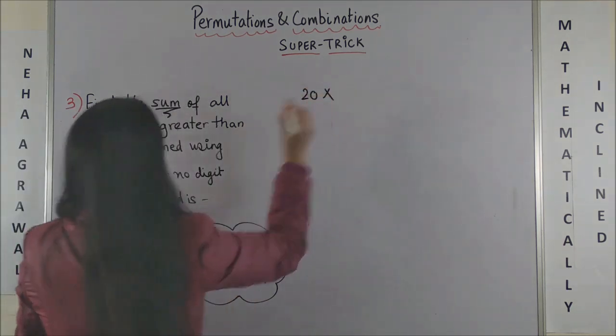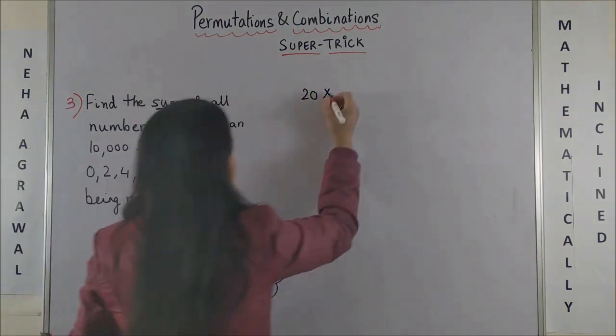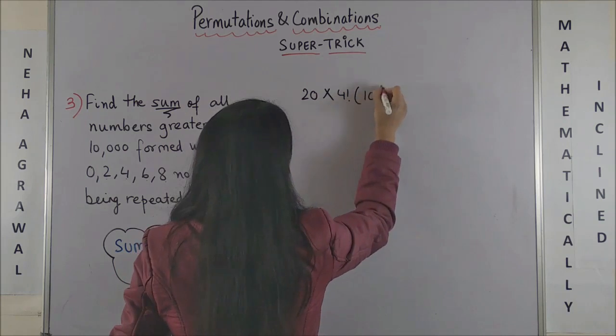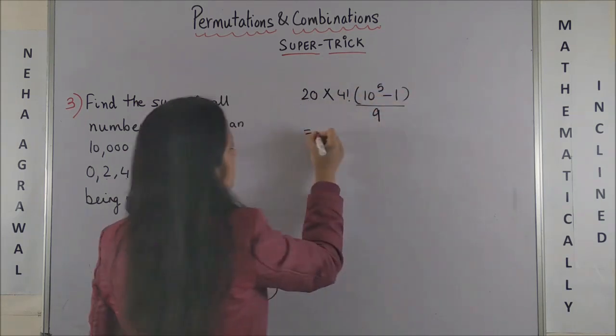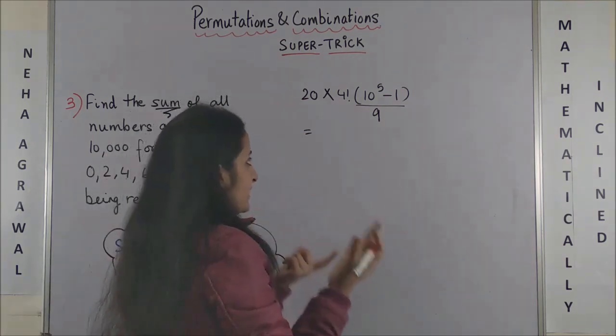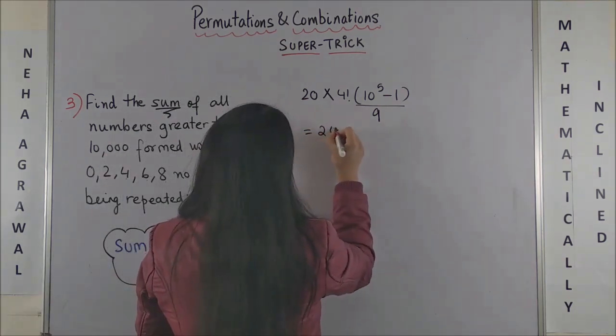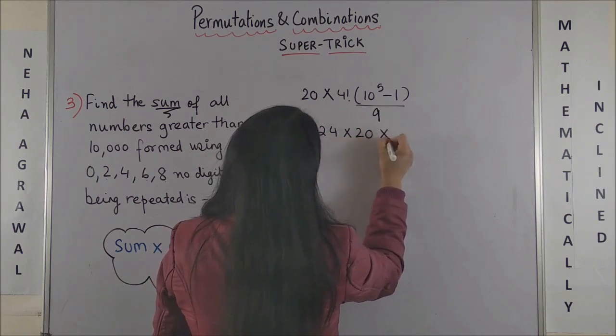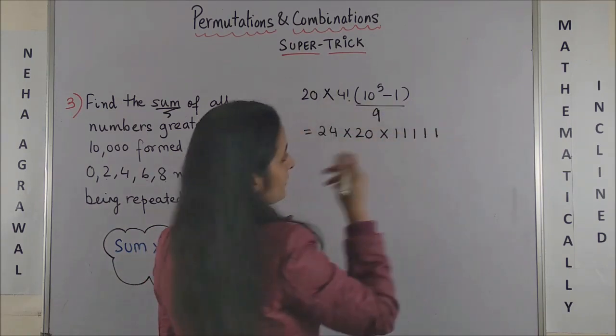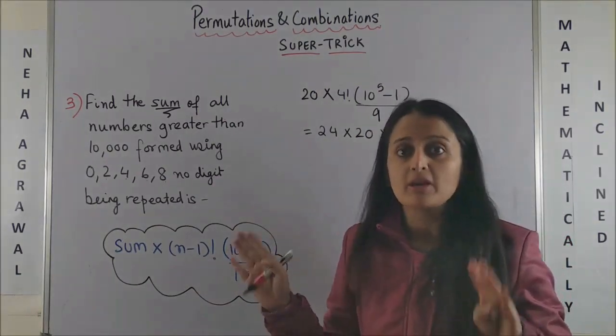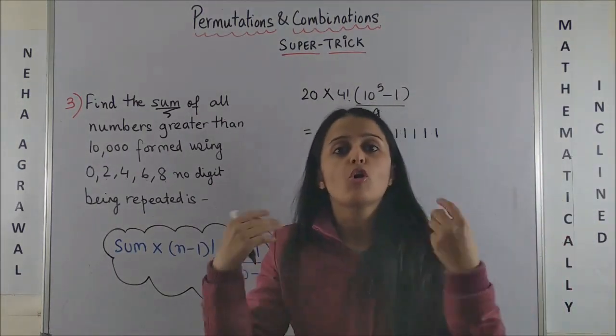You know 4 factorial is 24, so you get 24 into 20 and this would give you 11,111. But you're not going to stop here because this sum also includes all those numbers when you had put 0 at the ten thousands place.